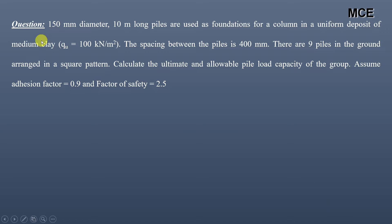I have been given a question which states that 150 mm diameter, 10 meter long piles are used as a foundation for a column in a uniform deposit of medium clay having unconfined strength of 100 kPa. The spacing between the piles is 400 mm. There are 9 piles in the ground arranged in a square pattern. We have to calculate the ultimate and allowable load capacity of this pile group assuming adhesion factor is 0.9 and factor of safety is 2.5.